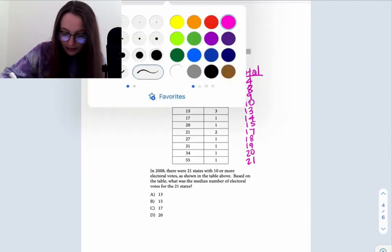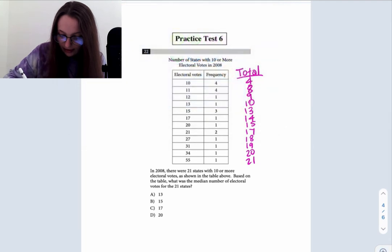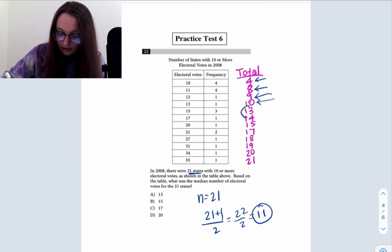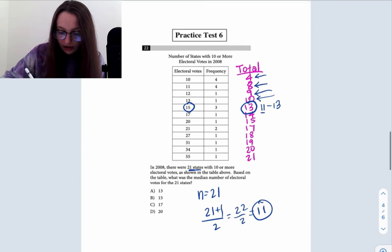Let's apply the median position formula. We know that we're talking about 21 different states, so n is equal to 21. 21 plus one divided by two gives us 22 over two, which is position 11. We need to find where position 11 is. It's going to fall in this range right here with 15 electoral votes, because this has positions 11 through 13. So the median is 15 electoral votes, which is choice B.